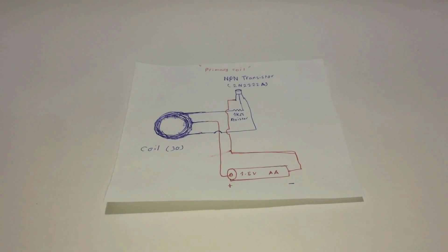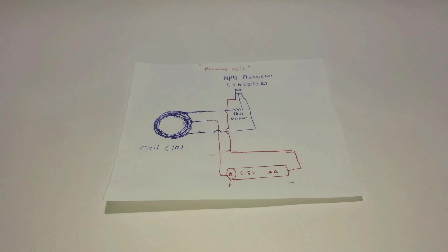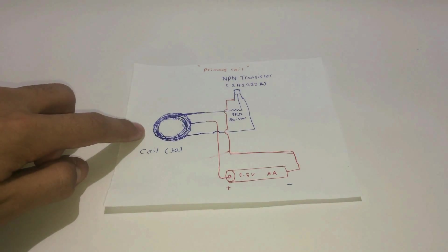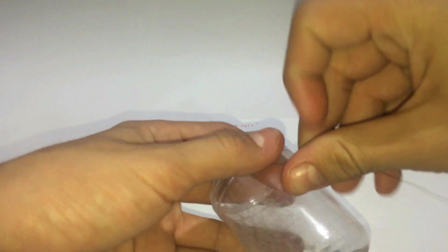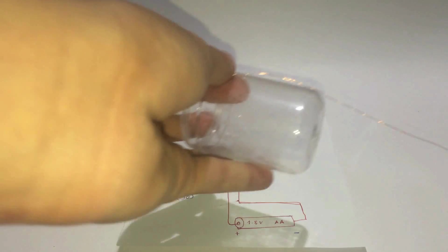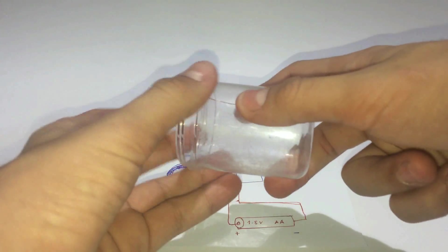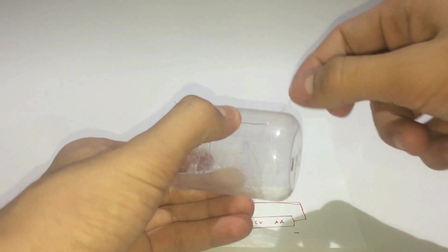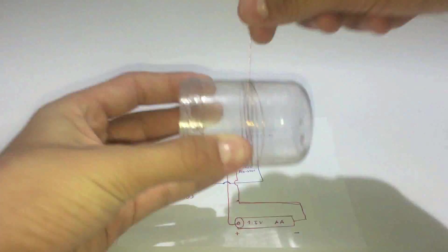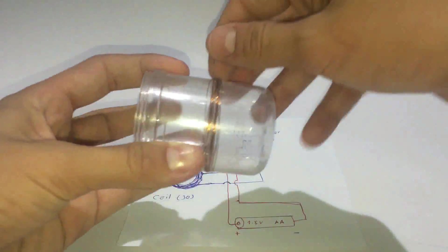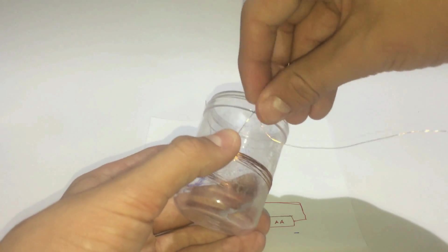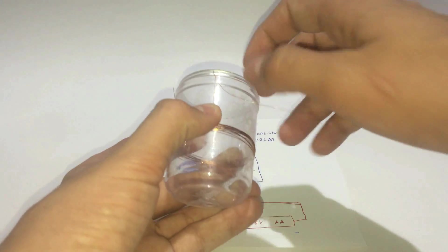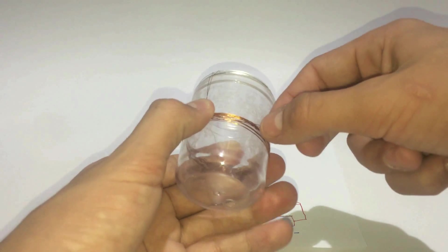Now it's time to make the primary coil or the transmitter circuit. We'll start by making the 3-pin coil. Wind copper wire around the round object for 15 turns. After 15 turns, make something like this and it will be your third pin, and continue winding until another 15 turns.